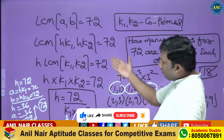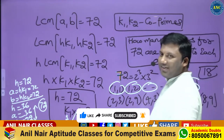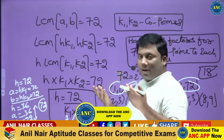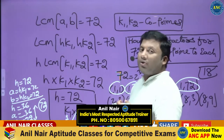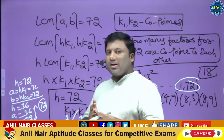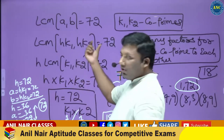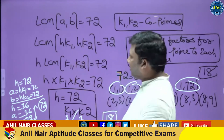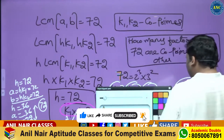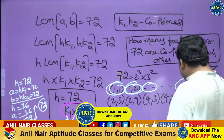And (8,9) also gives LCM 72. So totally, for this question, the number of unordered pairs is 18. Out of 35 cases, 17 left, 17 right, and 1 middle — totaling 18. This is a beautiful way of solving the question using the LCM-HCF concept, where h·k1 and h·k2 form the doublet of k1 and k2.